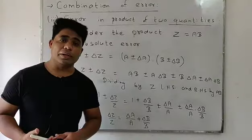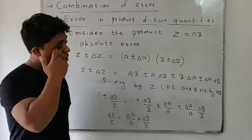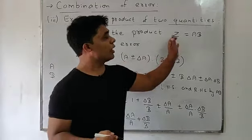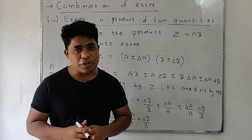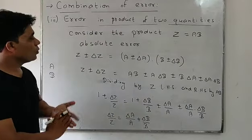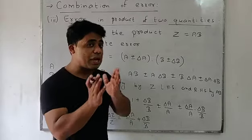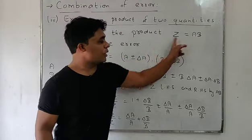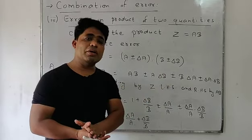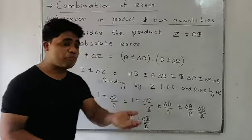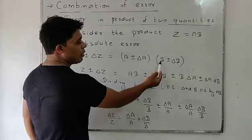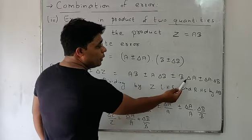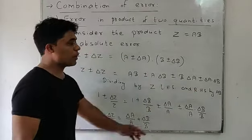Third case: error in product of two quantities. We multiply a and b to get z. We represent physical quantities with absolute error: z plus-minus delta z equals (a plus-minus delta a) multiplied by (b plus-minus delta b). Expanding: a times b, plus a times delta b, plus b times delta a, plus delta a times delta b.